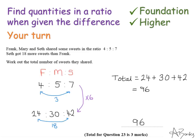Here's the solution. I've written Frank, Mary, and Seth with the ratio 4, 5, and 7. The difference at the moment between Frank and Seth is 3. I want that difference to be 18, so I need to multiply everything by 6. That gives me 24, 30, and 42.